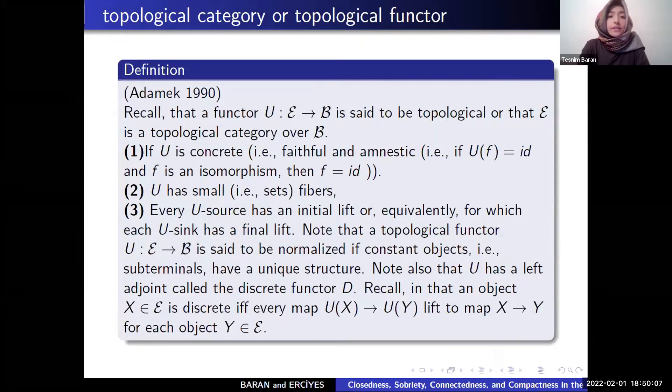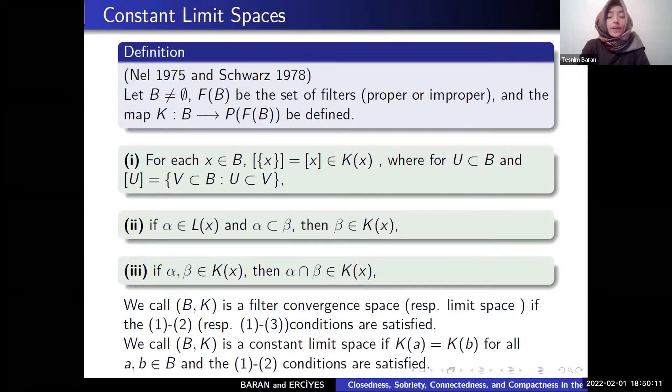The definition is the definition of topological category and constant limit spaces. Let B be a non-empty set. F is the set of filters on B. K is a function satisfying following conditions. First condition is for each x in B, dot x in K(x). Second condition if alpha in K(x) and beta contains alpha, then beta in K(x). And if alpha, beta in K(x), then intersection in K(x). And we call (B,K) is a limit space. If K constant function, we call (B,K) the constant limit space.